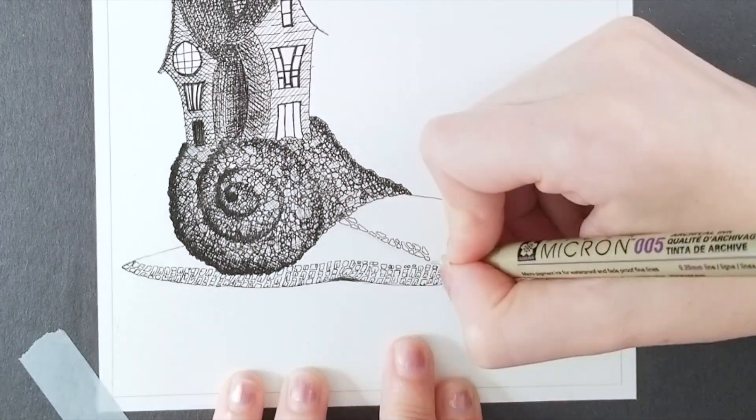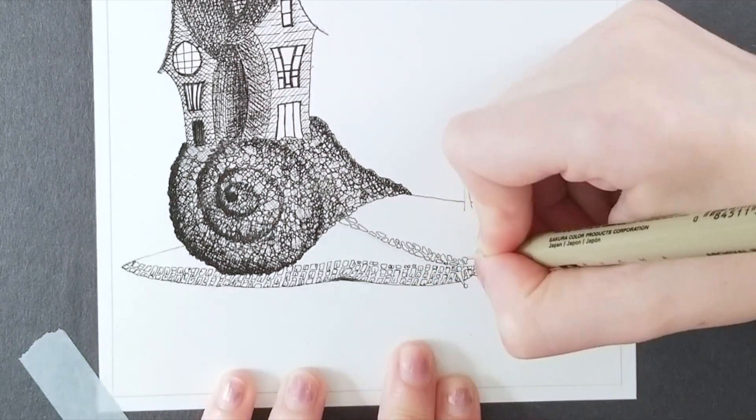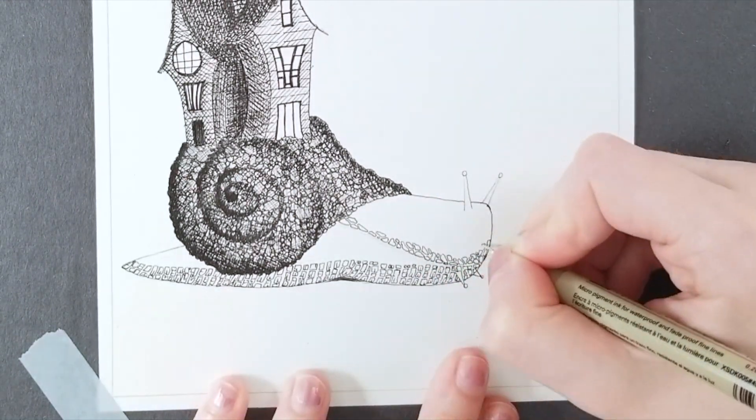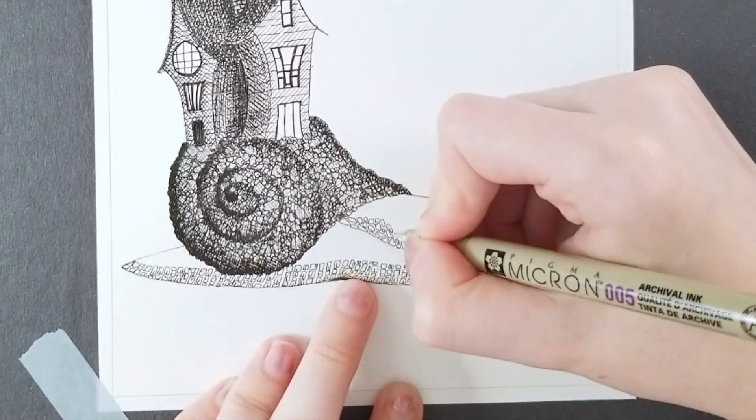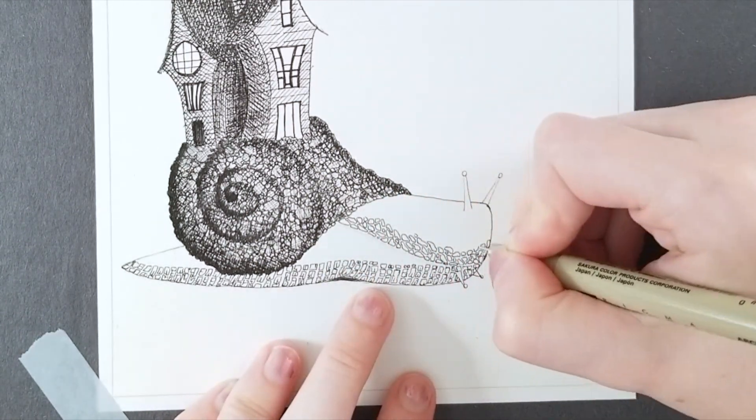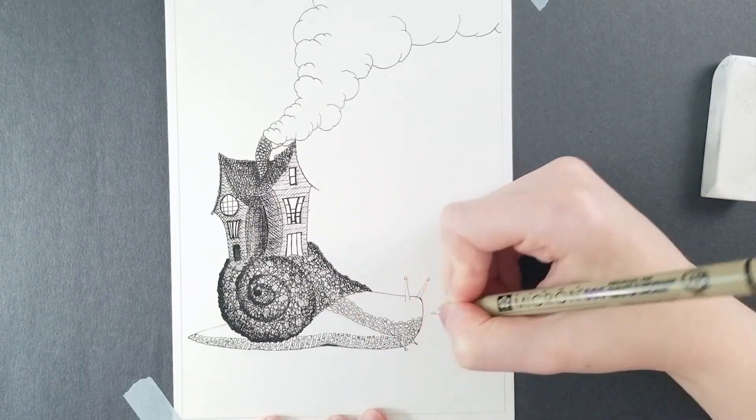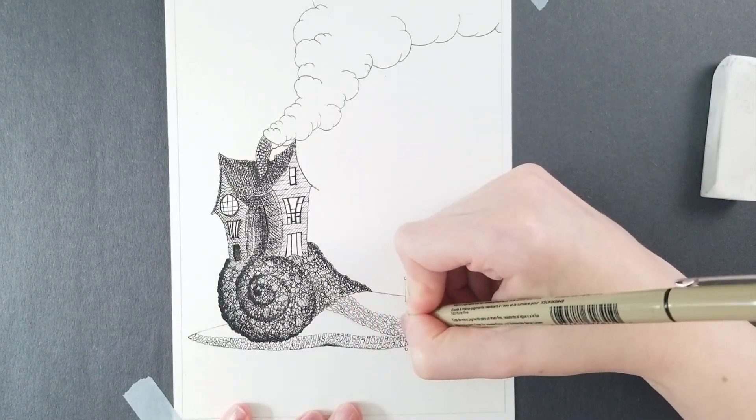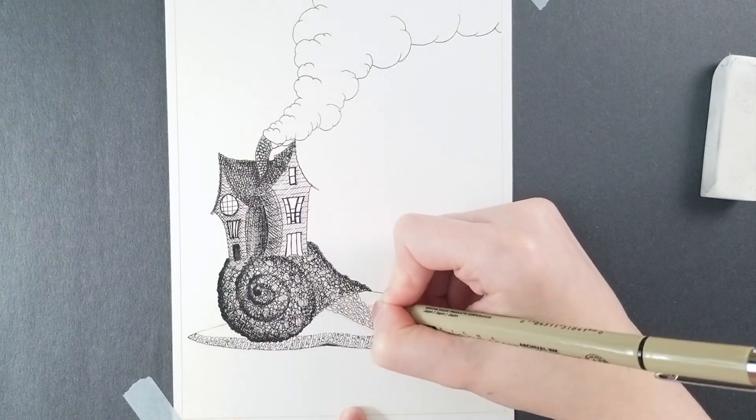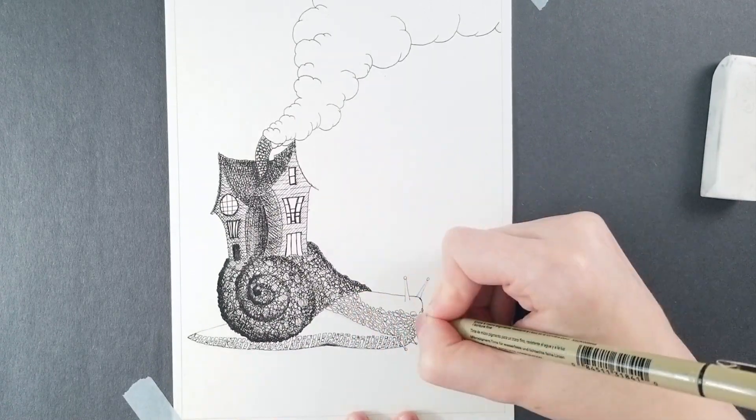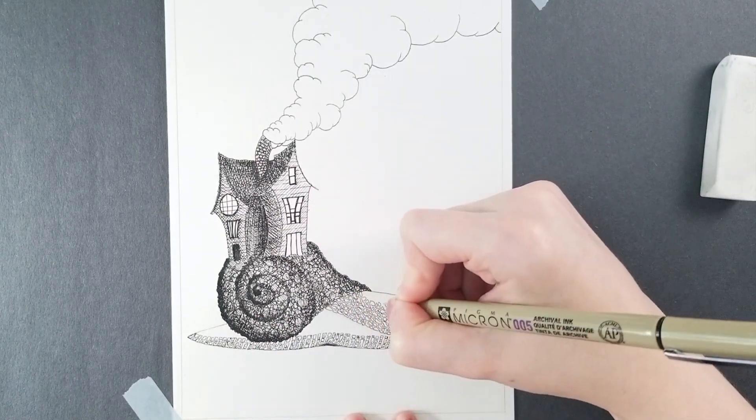It was at that point that the young witch saw that the crack she had repaired earlier had spread toward the center of the snail's shell. Again, she patched up the shell with mud and grass, but this time the snail did not leave. Instead, he asked the young witch why she was traveling through the forest, to which she answered that she was trying to find a new place to build her home.